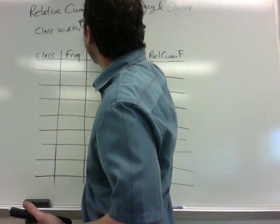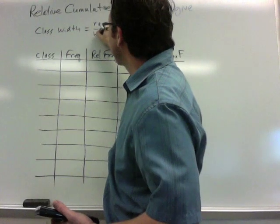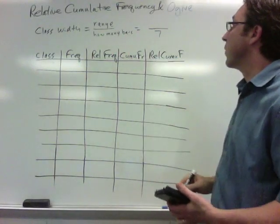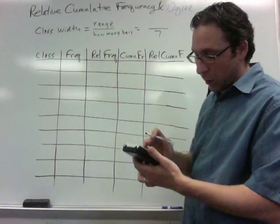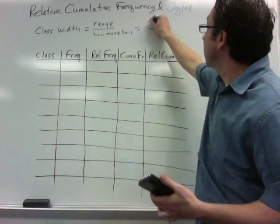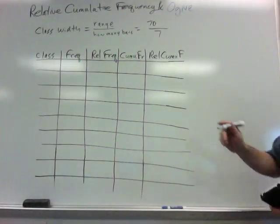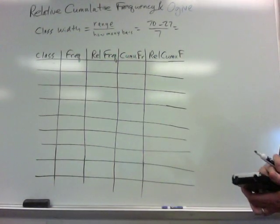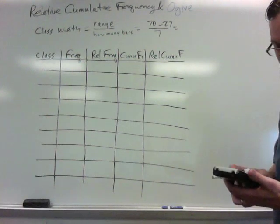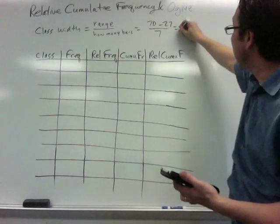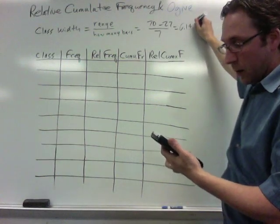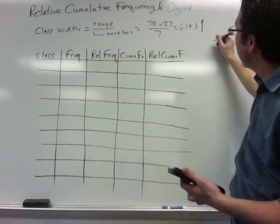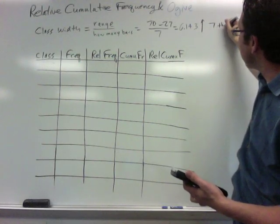To figure out the class width, the formula is the range divided by how many bars. So suppose we wanted to get seven bars on our histogram. The range: the oldest signer was 70 years old and the youngest was 27. 70 minus 27 divided by 7 is 43 divided by 7, which comes out to be 6.143. With these questions you always round up to the next highest integer. So our bars will be 7 thick.